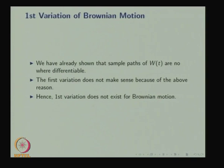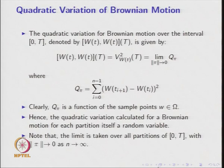Now we discuss the first variation of Brownian motion. We have already shown that the sample paths of W(t) are nowhere differentiable. Therefore, the first order variation does not make sense because the derivative does not exist, and hence the first order variation of Brownian motion does not exist.